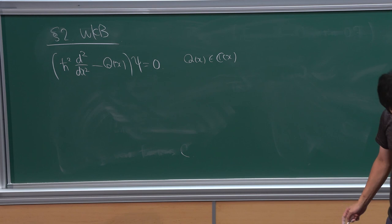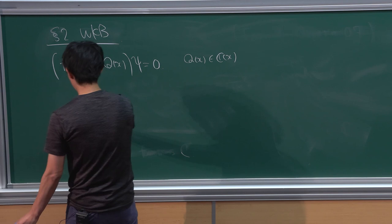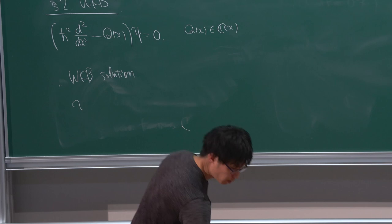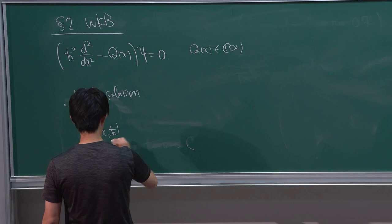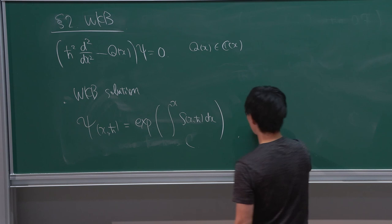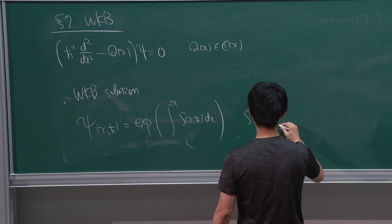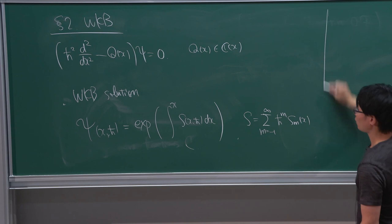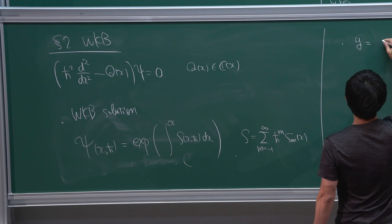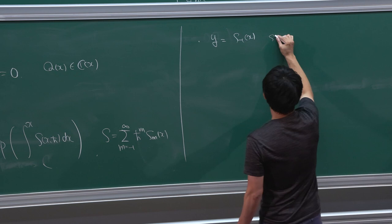Once you have this Schrödinger-type equation, you can construct the formal WKB solution by putting an ansatz psi(x, h-bar). The WKB solution is a formal power series solution where S has an h-bar expansion starting from 1/h-bar. Coefficients are functions of x. If you plug this into the Schrödinger equation you will have a recursion relation for the S_m. In particular, if you set y = S_{-1}(x), the leading term, it satisfies y^2 = Q(x).